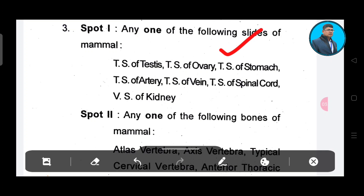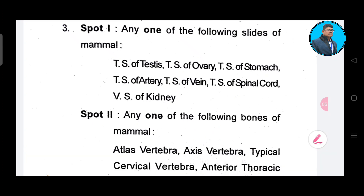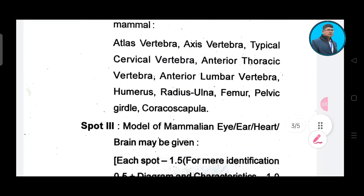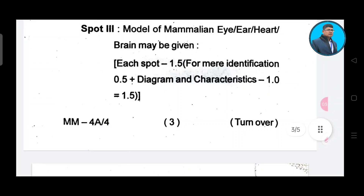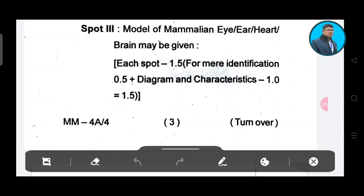Spot 2: any one of the following bones of mammals. Then Spot 3: model of mammalian eye, ear, heart, brain may be given. Each spot is 1.5 marks, total 1.5 marks — 1 and 0.5.